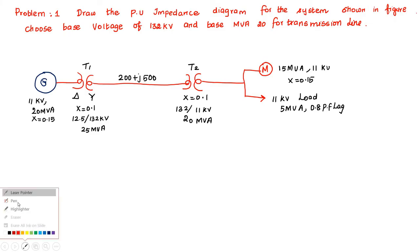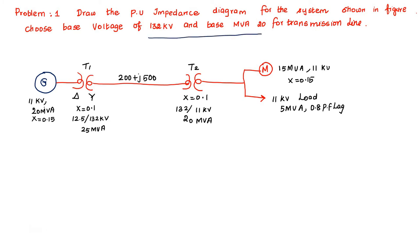Here, the base kV and base MVA for the transmission line are given. For other components in the power system, we are going to find them out. Base MVA is given as 20 MVA. This is common for all the components connected in the power system network. Next, I am going to find out the base kV for each and every component.